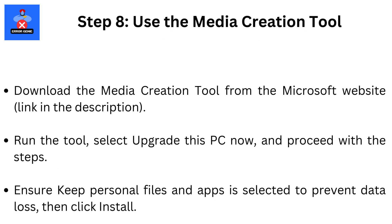Step 8: Use the Media Creation Tool. Download the Media Creation Tool from the Microsoft website link in the description. Run the tool, select Upgrade this PC now, and proceed with the steps. Ensure Keep Personal Files and Apps is selected to prevent data loss, then click Install.